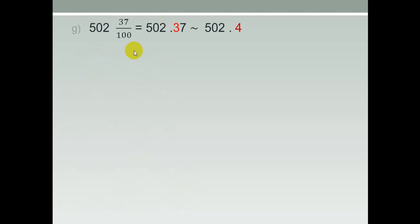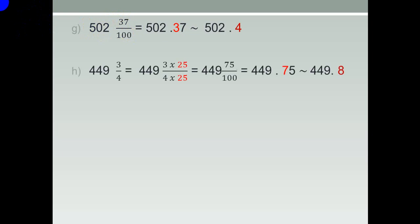G: We have a mixed number — 502 and 37 over 100. What can I do? Put the decimal point after two digits from the right. It becomes 502.37. Where is the tenths? Tenths is three. Look to the next digit: seven — the hundredths is seven. Seven is strong, add one to three — it will be four. The answer is 502.4.